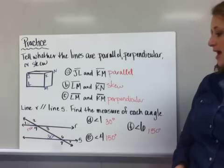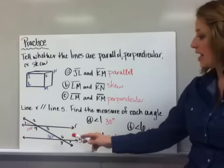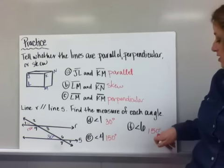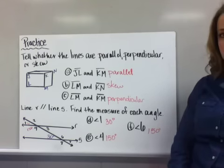Then it asks about angle 6. Angle 6 and angle 4 are alternate interior angles and we know those are congruent so it is also 150 degrees.